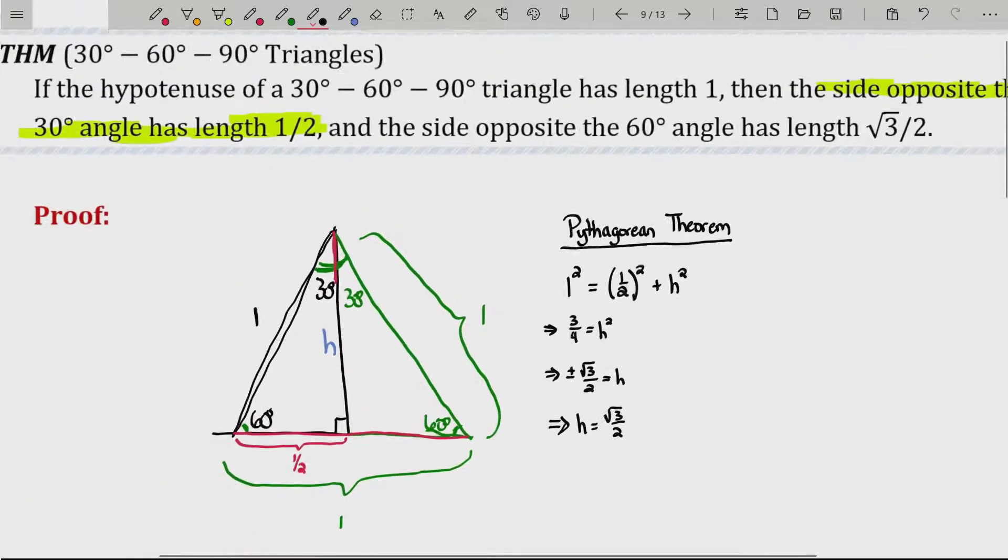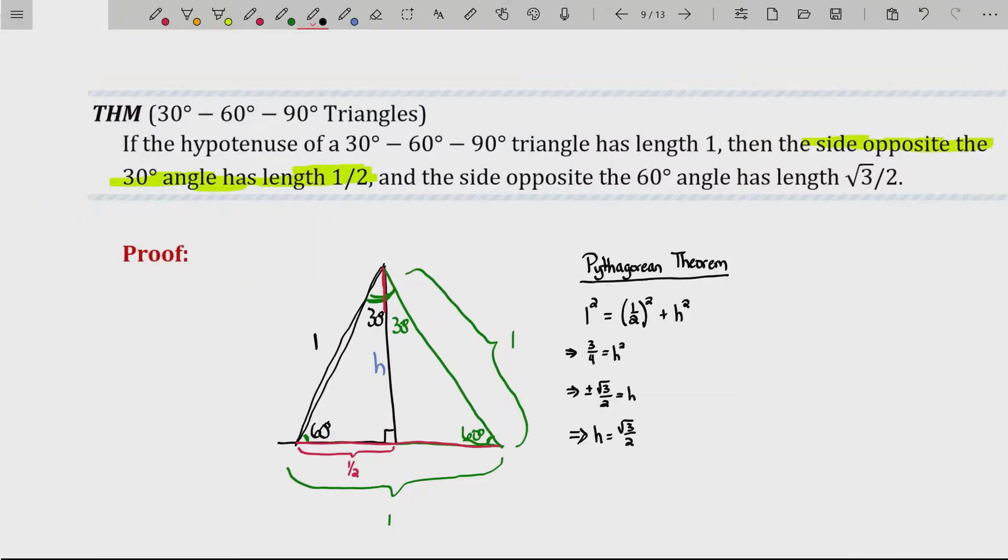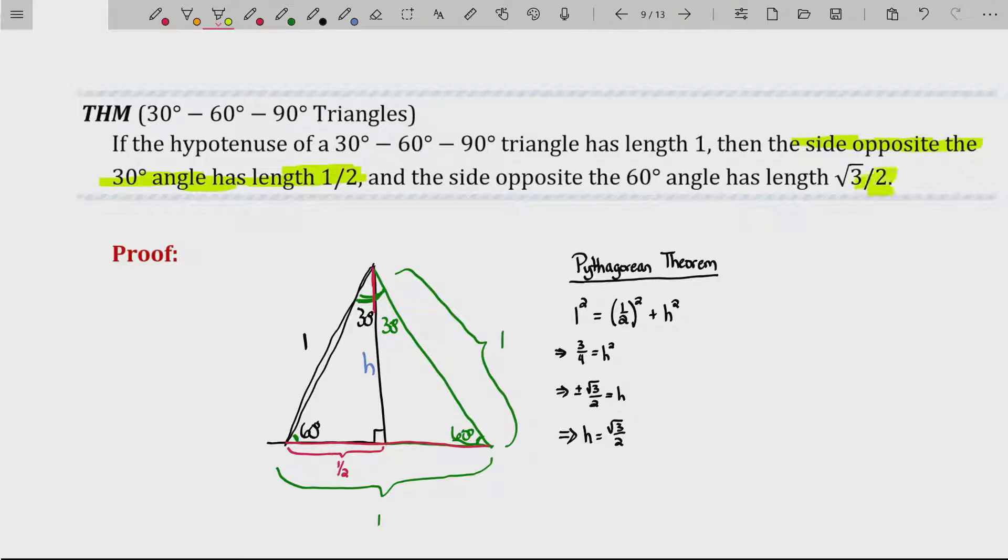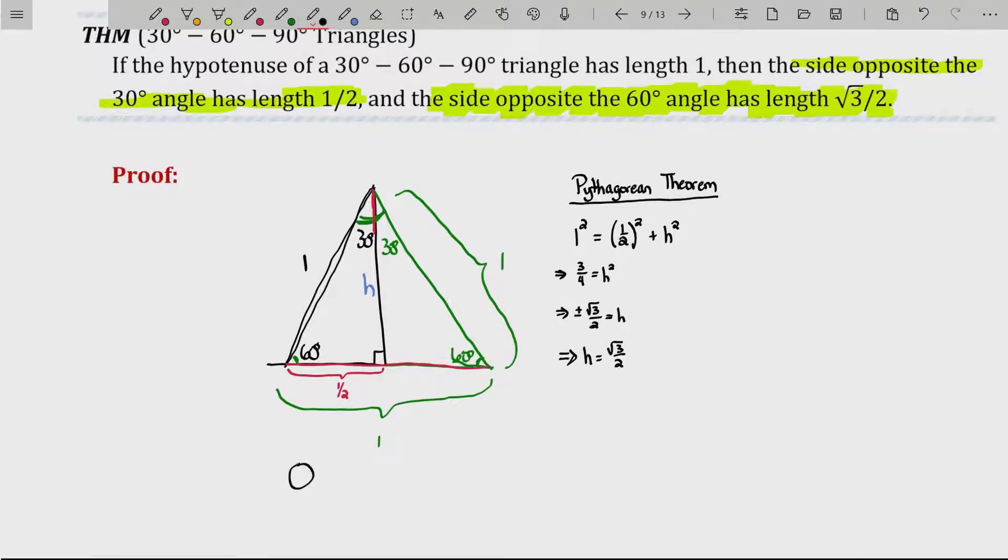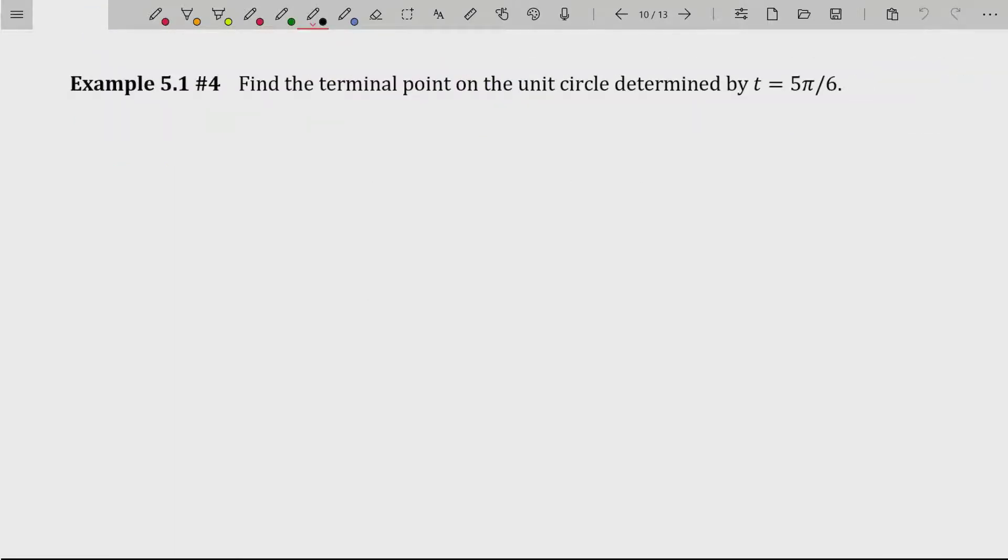So, I'm just going to write this implies that h is equal to root three over two. Remember what h stood for? It was the side opposite the 60-degree angle. And so, we have proven that side has length root three over two. And that is the end of that proof. QED. Quod erat demonstratum. Of course, it would be nice to be able to use that. And so, we're going to here.